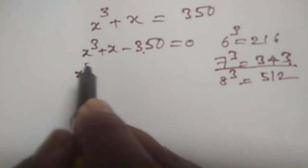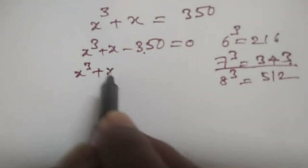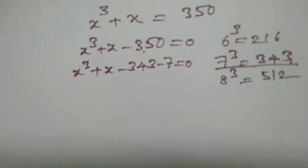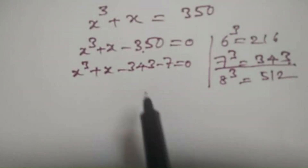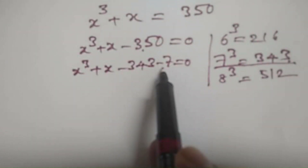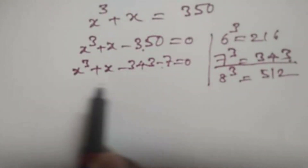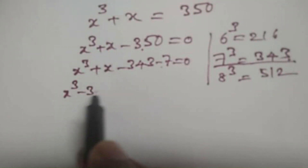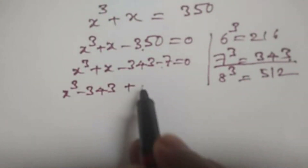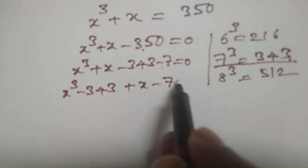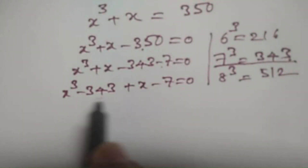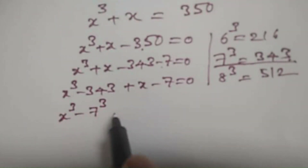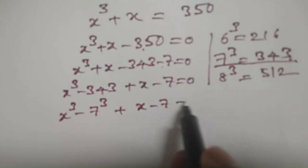So write this equation as x cubed plus x minus 343 minus 7 is equal to 0. We are writing 350 as the sum of 343 plus 7. Now bring 343 to the side near x cubed: x cubed minus 343 plus x minus 7 is equal to 0. We write 343 as 7 cubed: x cubed minus 7 cubed plus x minus 7 is equal to 0.